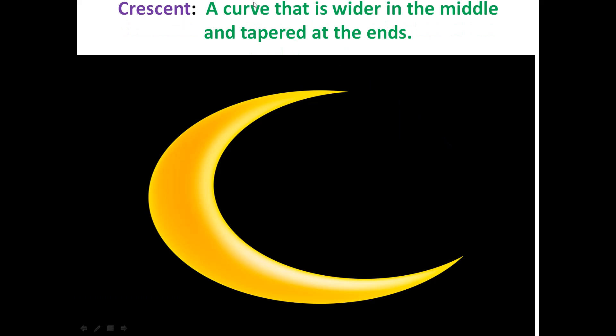Crescent: A curve that is wider in the middle and tapered at the ends. We will see a picture here. This is the middle portion. This is wider and this is tapered at the end. It is becoming narrower as we move towards the end. So the middle portion is wider and it is tapered at the end. So this is the crescent.